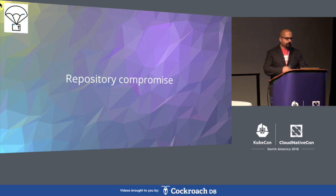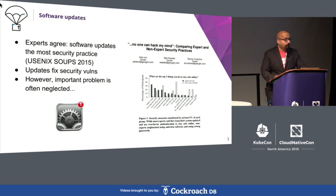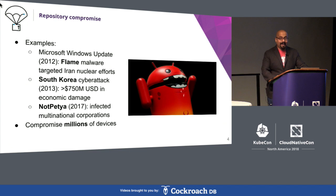First, let's remind ourselves of the problem we're trying to solve. Experts agree that software updates are the most important thing you can do to remain secure online, because updates fix security vulnerabilities that can be remotely exploited by attackers. Although it's crucial to update software, an important part of the picture is often neglected: a compromise of the repository used to serve software updates. When this happens, the impact is huge.